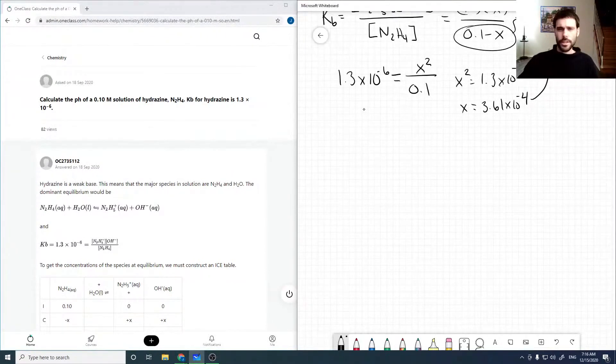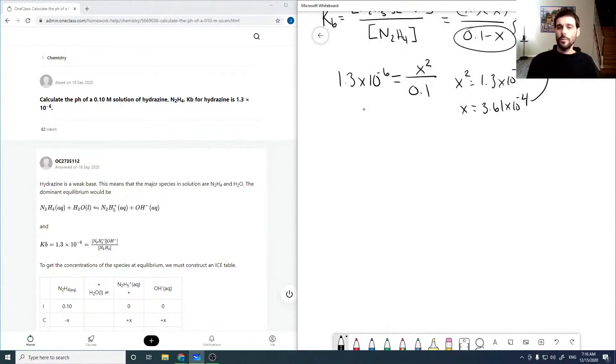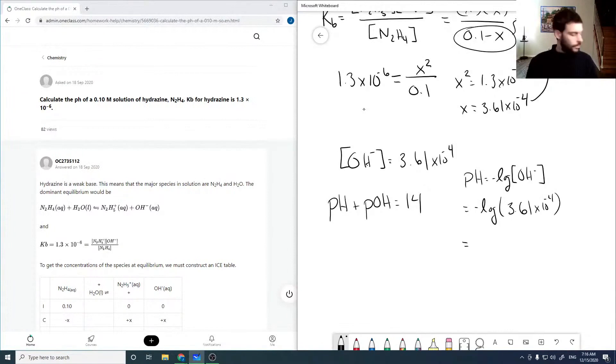Okay, so the question asks for the pH. So we have that our OH concentration is 3.61 times 10 to the minus 4. To get pH, we can use that the pH plus our pOH is always 14. And our pOH is the negative logarithm of our OH minus concentration, which is the negative logarithm of 3.61 times 10 to the minus 4, which comes out to be 3.44.